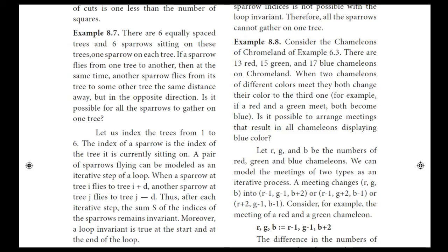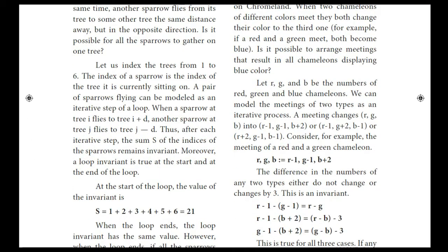Next is Example 8.7. There are 6 equally spaced trees with 1 sparrow sitting on each tree. If a sparrow flies from one tree to another, then at the same time another sparrow flies from its tree the same distance away but in the opposite direction. We index the trees from 1 to 6. The index of the sparrow is the index of the tree it is currently sitting on.